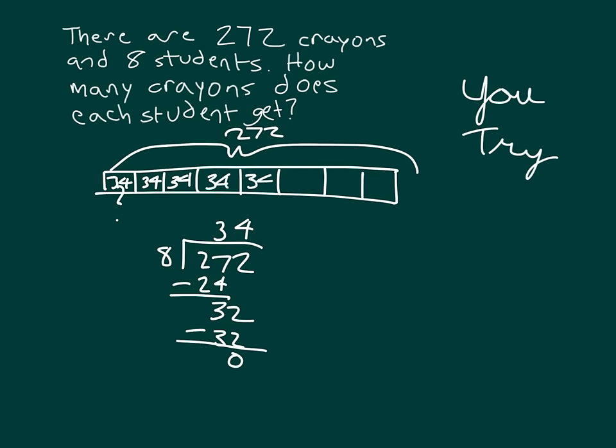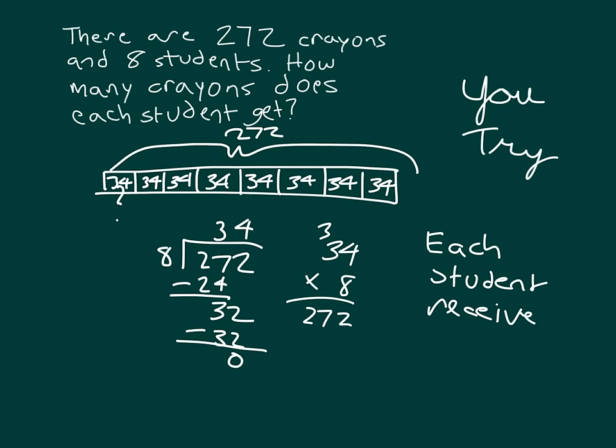And then make sure to express your answer clearly. If you ran a check for it, it would have looked like this here. Each student receives 34 crayons. With this case, we actually knew the number of groups. We just didn't know how much was within each of those groups.